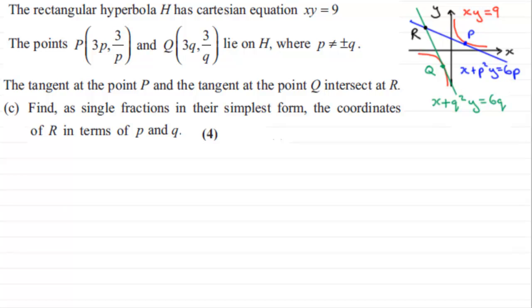What we've got then is basically simultaneous equations to do to get R. So let's just put down those two equations of the tangent. We've got the tangent at P is x plus p squared y equals 6p, and Q the tangent is x plus q squared y equals 6q. Because we're doing simultaneous equations, let's number those two equations 1 and 2.